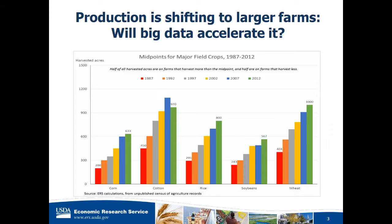This chart provides background for thinking about big data and farming in the United States. It shows for a set of field crops the growth in the size of farms over recent decades, drawing on the census of agriculture. What's reported in each of these sets of lines for commodities is the midpoint acre - the acre at which half of the acres are in farms above this size and half are below. You can see the tremendous growth in recent years in the size of farm.